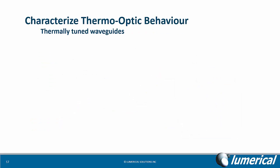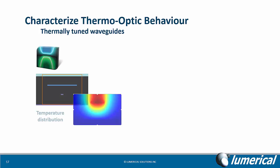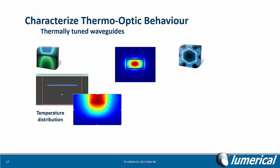To simulate thermally tuned waveguides, we can use the heat transport solver in Device to calculate the temperature distribution around the waveguide, which is being heated by a wire located above. This also leads to a change in the optical refractive index of the waveguide, and we can use MODE Solutions to calculate the phase change as a function of applied power.